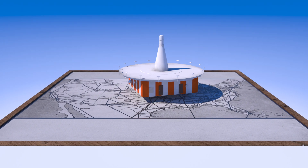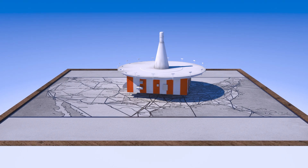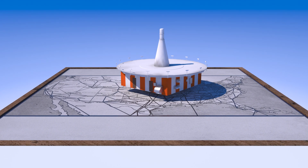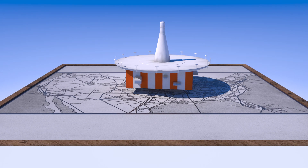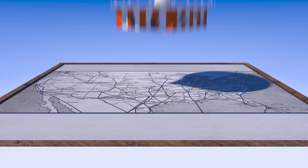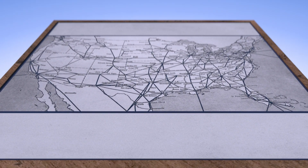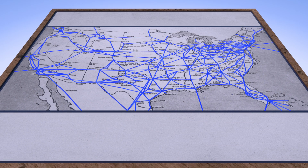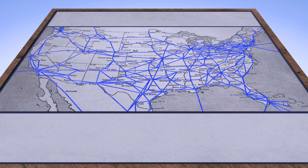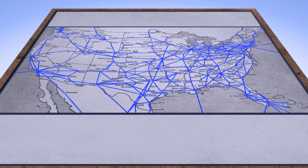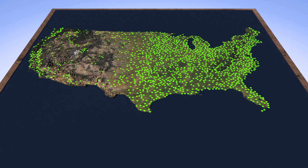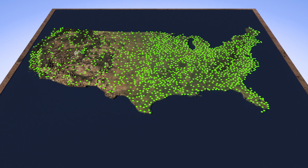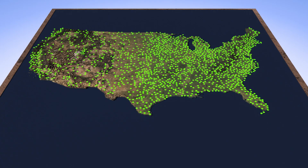VORs were first introduced in the 1940s as the primary means of navigation for commercial and general aviation. This technology empowered the development of artificial highways in the sky, and by the year 2000, there were over 1,000 VORs operating in the United States.